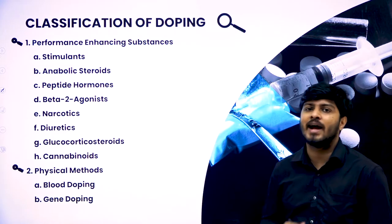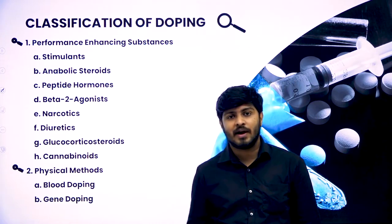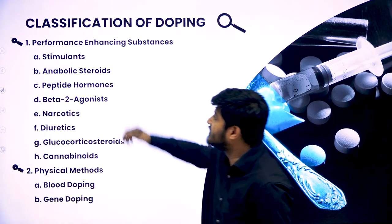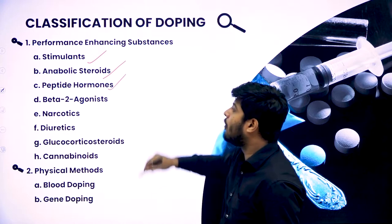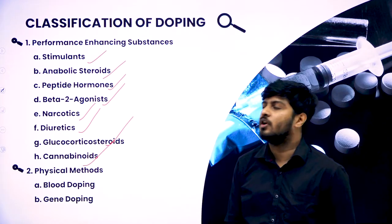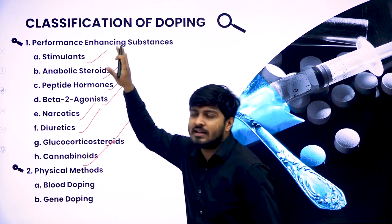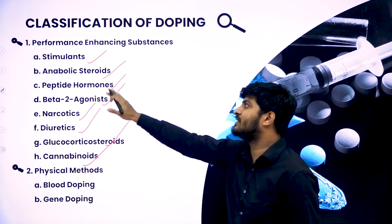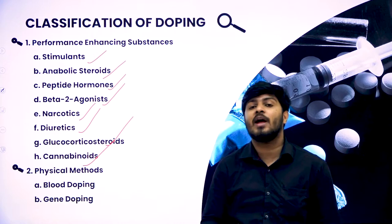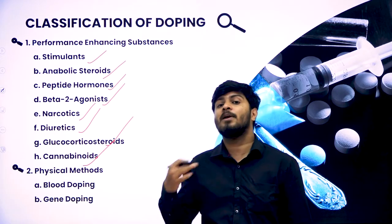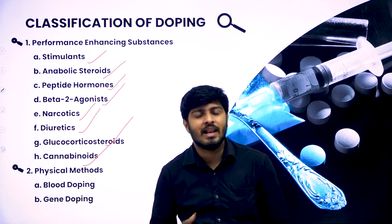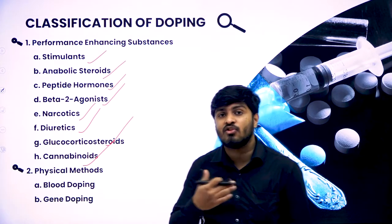Now let's look into different classifications of doping or drugs. There are performance-enhancing substances: stimulants, anabolic steroids, peptide hormones, beta-2 agonists, narcotic diuretics, glucocorticosteroids, and cannabinoids. When you talk about stimulants, these particular substances improve your stimulus — the reflexes of a person in the sports field get improved when that person consumes stimulants. At that period of time it may look very useful, but in the longer term it causes damage and becomes unfair for others who are performing on a natural level.